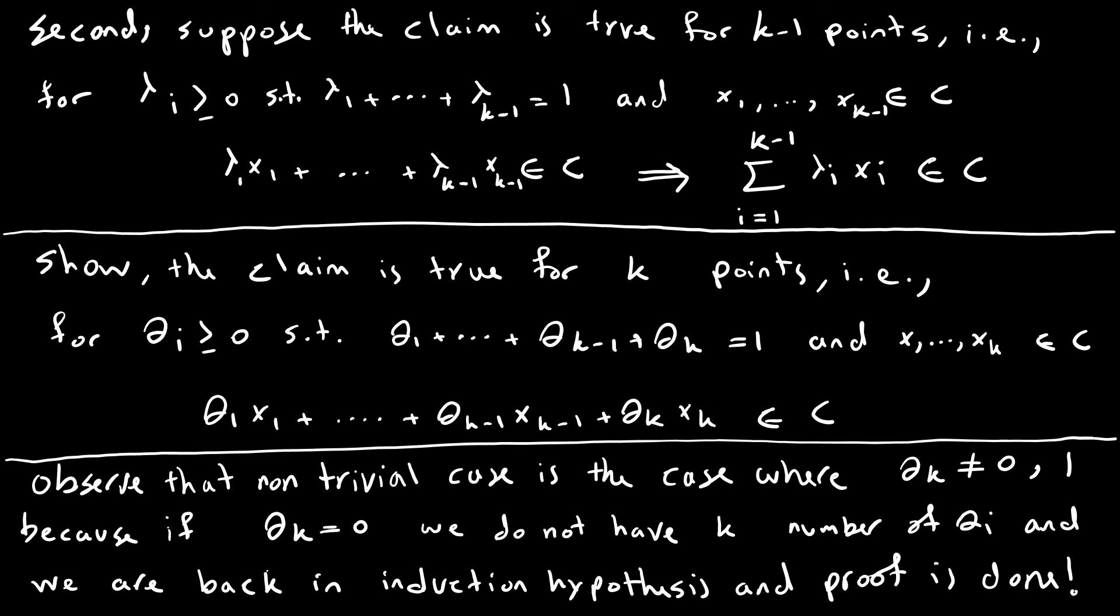For the second step or the bridge, we assume this is true for k minus 1 points. That means we have non-negative coefficients and sum of k minus 1 coefficients is 1 and the convex combination of all these k minus 1 points is back in C. So what is the claim? The claim is this is true for k points. And for k points means we want to show this part right here that is true for k points.